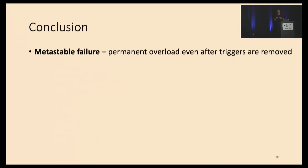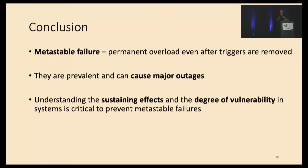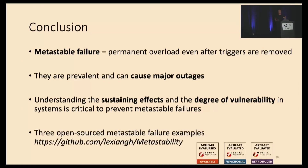In conclusion, metastable failures are permanent overload that persists even after triggers are removed. They are prevalent and can cause major outages. Understanding the sustaining effects and the degree of vulnerability in systems is critical to prevent metastable failures. We have built and open-sourced three metastable failure examples for people to study and test solutions. With that, I would like to conclude this talk, and I'm happy to take any questions.